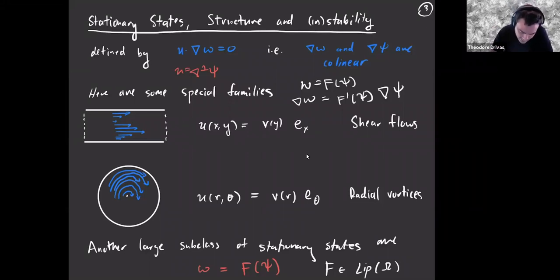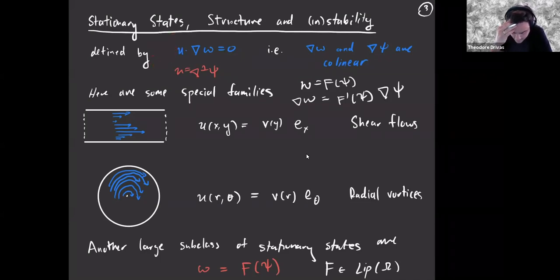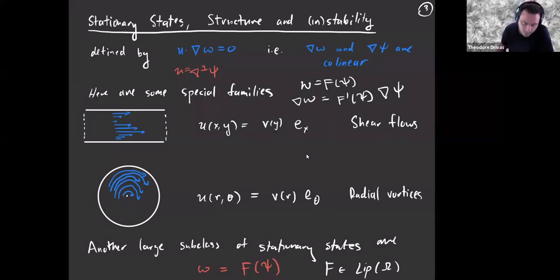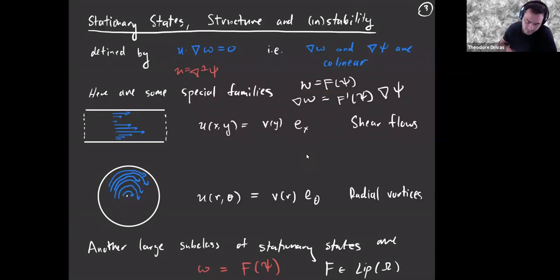If you're in a smooth stationary state, you satisfy this equation. The vorticity equation just has ∂_t ω = 0, meaning the gradient of the vorticity and the gradient of the stream function are collinear locally. That means locally there's some functional relationship between the vorticity and the stream function. Globally this need not be true — there may not be a single-valued function over the whole domain — but locally it's true everywhere, and there's a large class of steady states for which it's globally true.